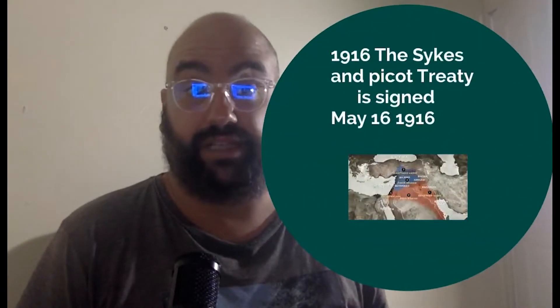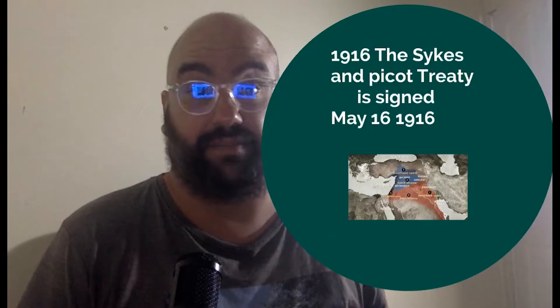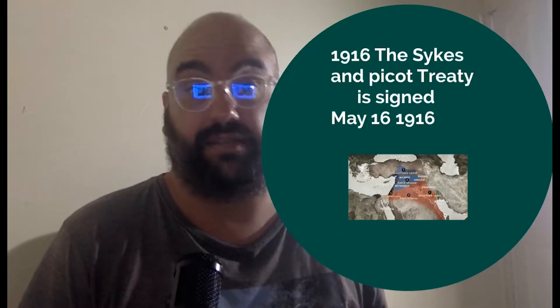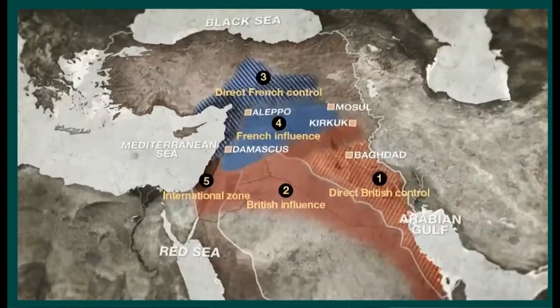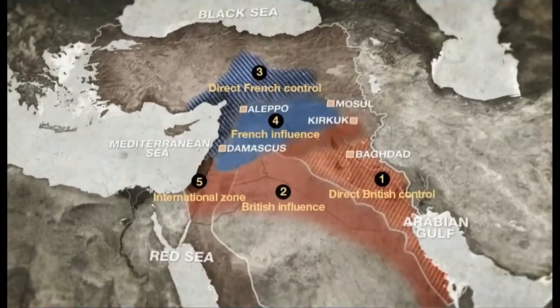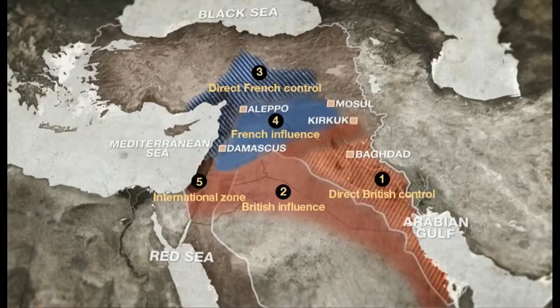In 1916, the Sykes-Picot Treaty is officially signed. I'll be going into greater detail of the different areas that had been mapped out at the time and the reasons they were mapped out.